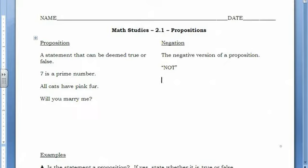The one that I did first was 7 is a prime number. I could say 7 is not a prime number. That would be the negation of 7 is a prime number. Or, all cats have pink fur. How about no cats have pink fur?